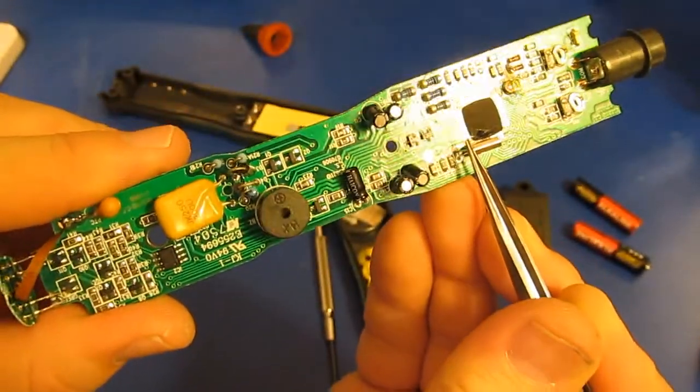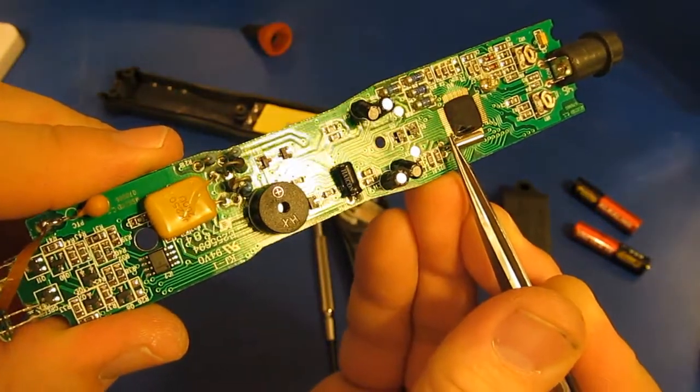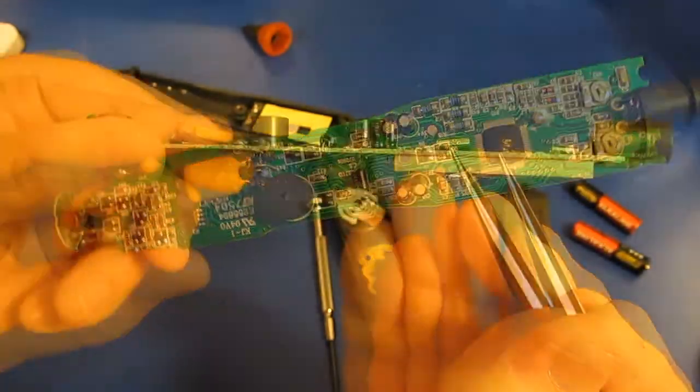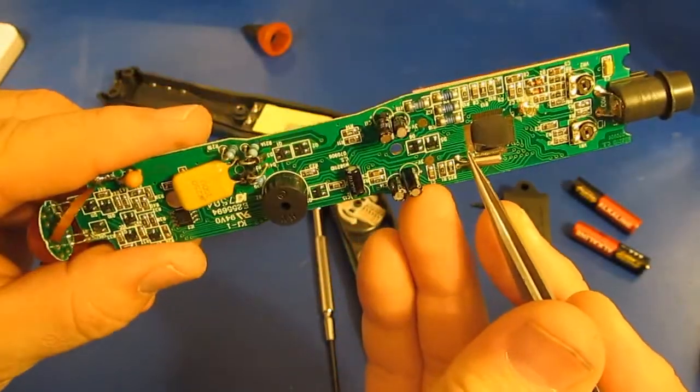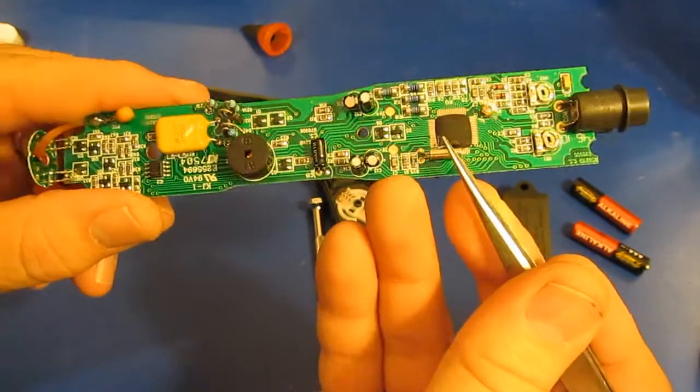You know I wonder if this isn't the lead right off of the crystal. It looks to be about the right diameter. I just wonder if that fell off when they inserted it and somehow got wedged in there.